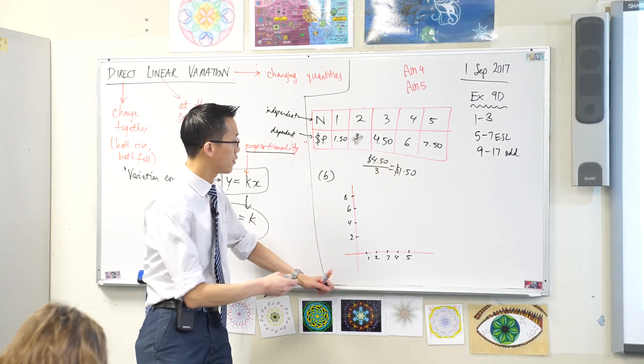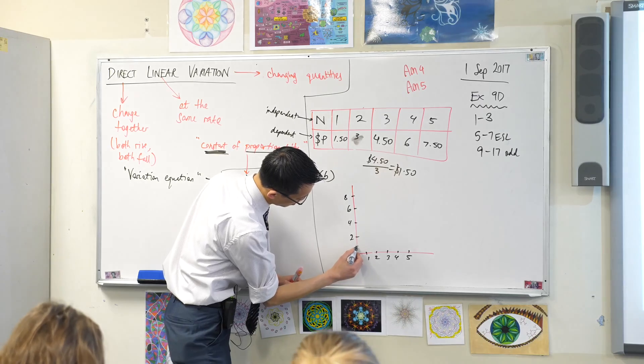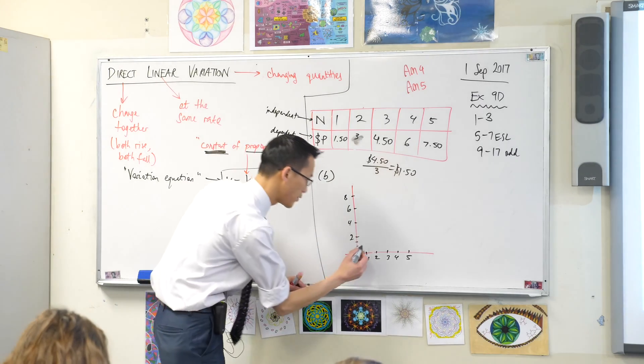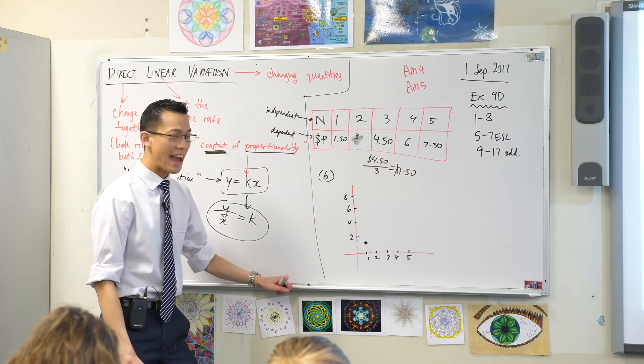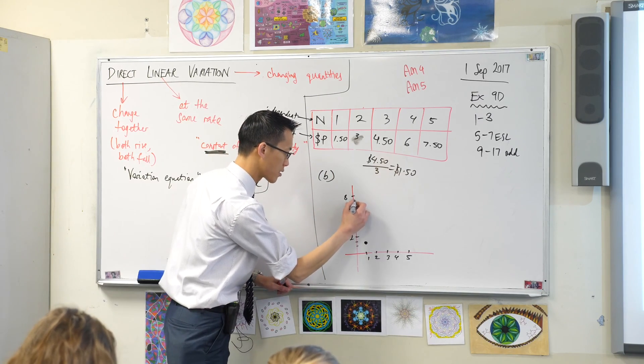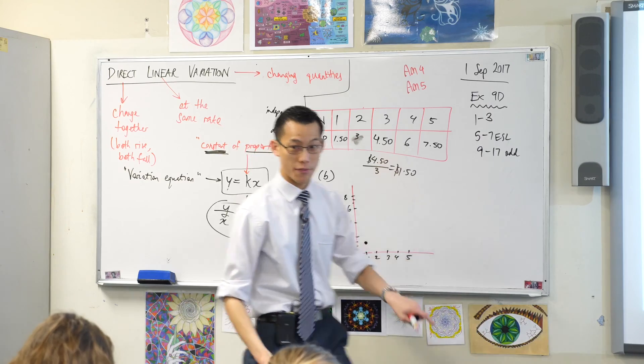So on mine, I should find $1.50 is gonna be three-quarters the way up here. That'll be $1.50 for a single pack of pencils. And $7.50 is gonna be around there, so that corresponds to five packs.